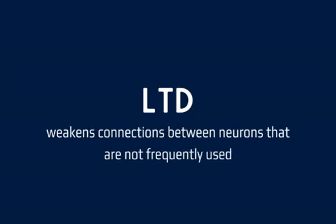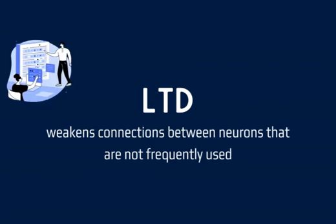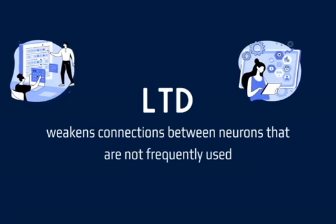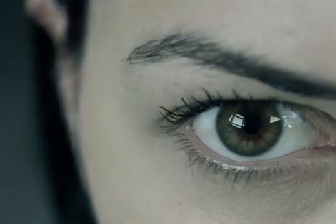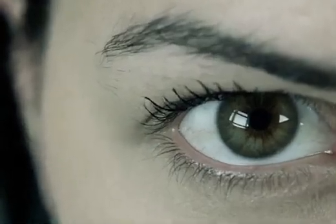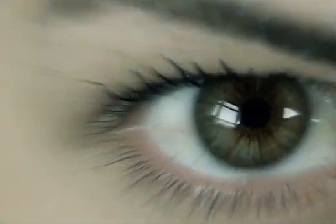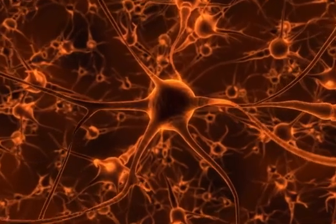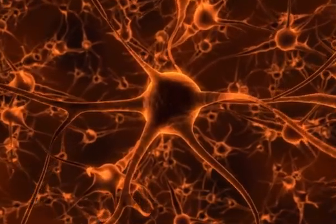By weakening unnecessary connections, neural networks become more efficient at processing information and performing their unique function. These concepts of synaptic plasticity apply all over the brain, and are what allow us to change and adapt to our environments.